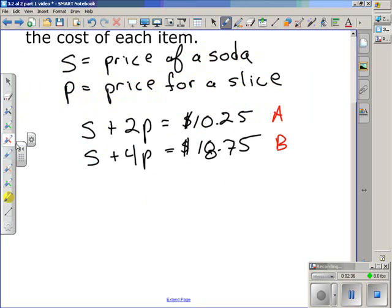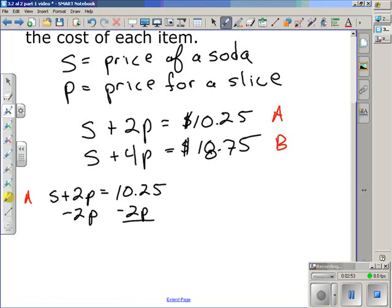The neat thing about this one is that both equations have the variable S having a coefficient of one. So we're going to take a slightly different approach than I did in earlier problems or earlier examples. I'm going to take equation A, write it out. S plus 2P is equal to $10.25, and I'm going to solve it for S by subtracting 2P from both sides. When we do that, that tells us the price of a soda is equal to the opposite of two prices of pizza plus $10.25.